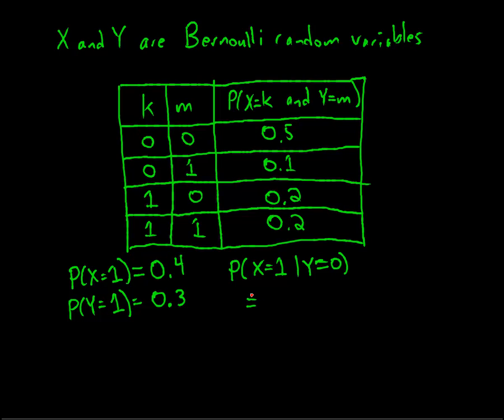Well, our formula for conditional probabilities says that this is the probability that both events happen divided by the probability that the second event happens. So the probability that X is 1 and Y equals 0 divided by the probability that Y is 0.